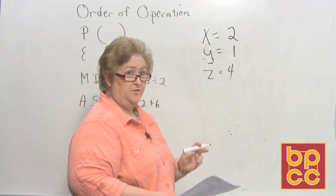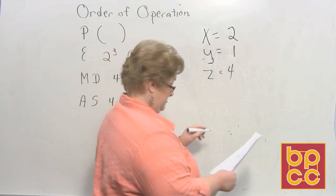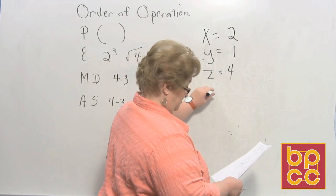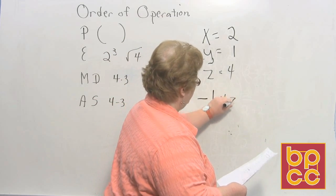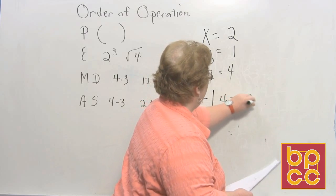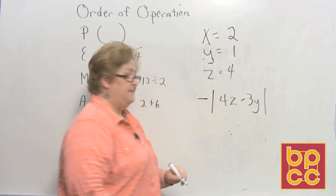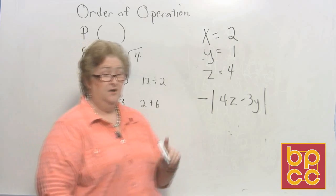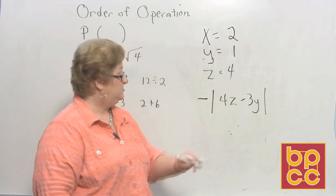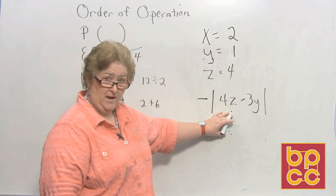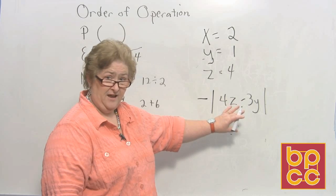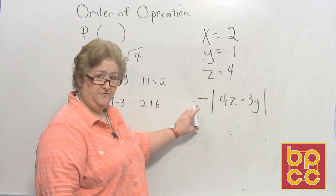Okay. I'm going to hit you up with absolute value again. Okay. Here we go. I'm going to put a negative on the outside. And I'm going to say 4z minus 3y. Okay. Now what are we going to do first? First, we're going to sub in the values for 4z minus 3y and totally solve that. Then we'll address the negative out here.